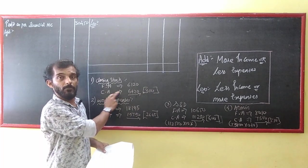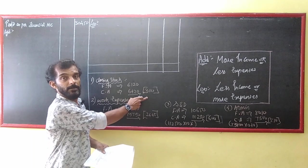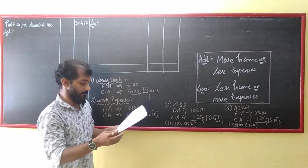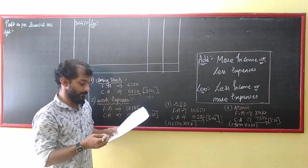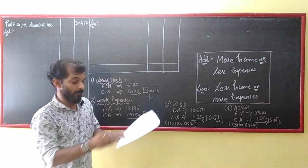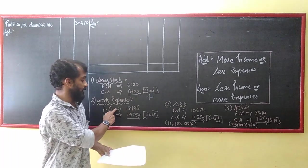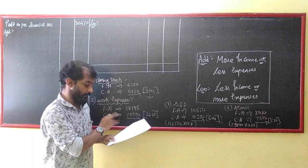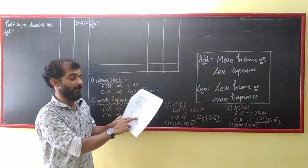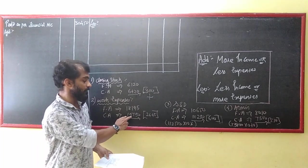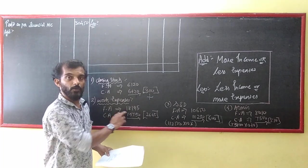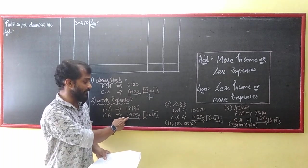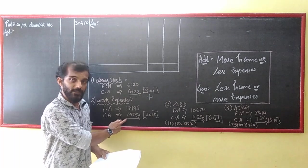Cost has more income — so we add the difference of 300. Next, works expenses: in FA they are 18,195, but in cost accounts they are taken at 100% of direct wages, which is 15,750. So cost has less expense — a difference of 2,445 — which means we add it back.